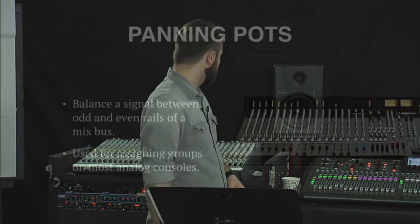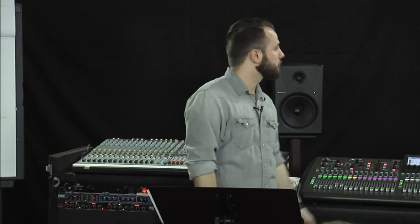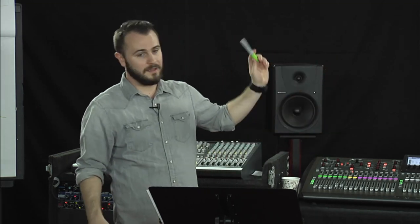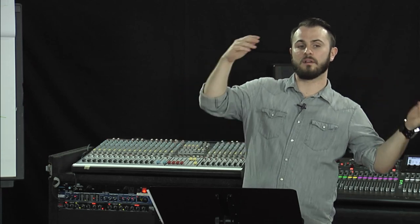Next we've got pan pots, which are used for way more than people give them credit for. In a primary mix bus setup this is typically just left to right, but it's more than that - it's actually balancing a signal between the odd and even rails of a mix bus. On your primary mix bus you've got a left and a right - odd and even. When you're left or right, it's leaning more heavily on the odd rail than the even rail. This also comes in handy for assigning groups.